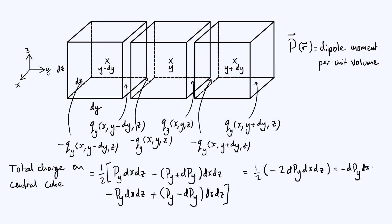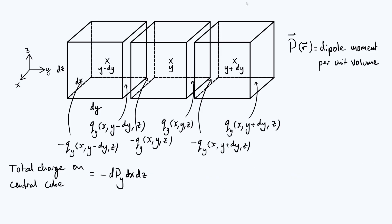All we have to do to convert that into a volume density of charge is divide that by our volume element. If we call that volume density rho, it's going to be minus dP_y dx dz divided by dx dy dz.